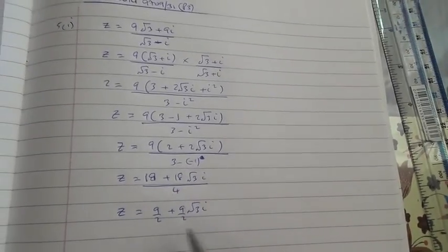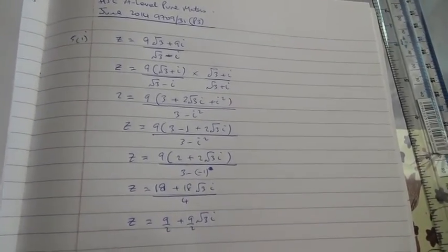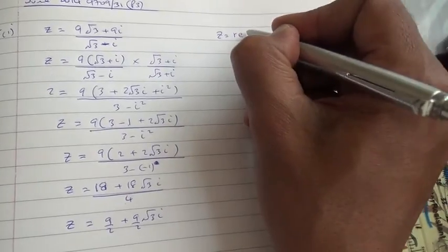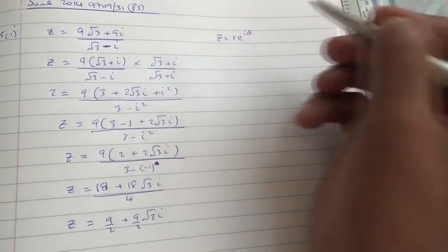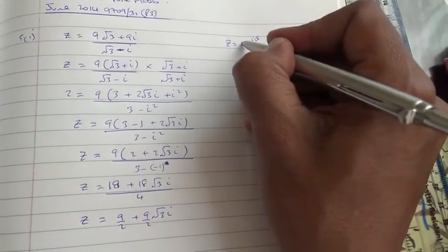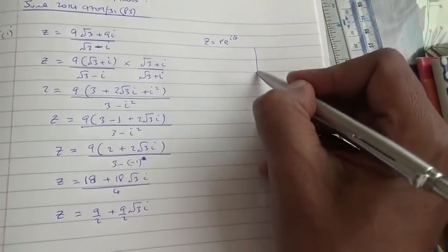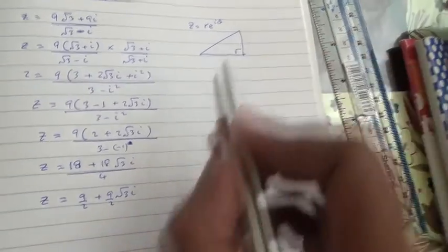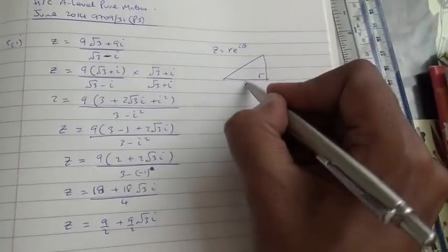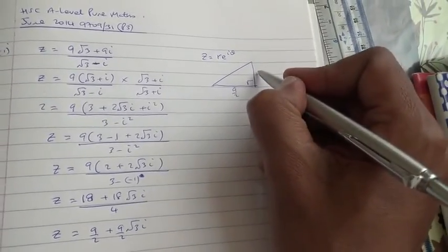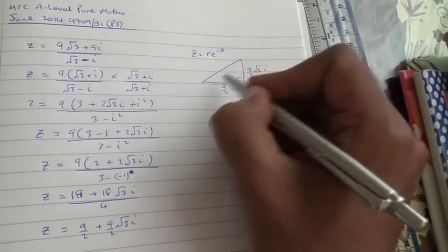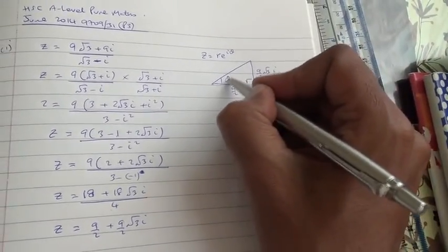Now, we need to express it in the form z equals r·e^(iθ). What is r? Okay, so if you imagine this is your normal triangle, the real part is 9 over 2. The imaginary part, which is the y-axis, is 9 upon 2√3i. So this is θ, the argument.